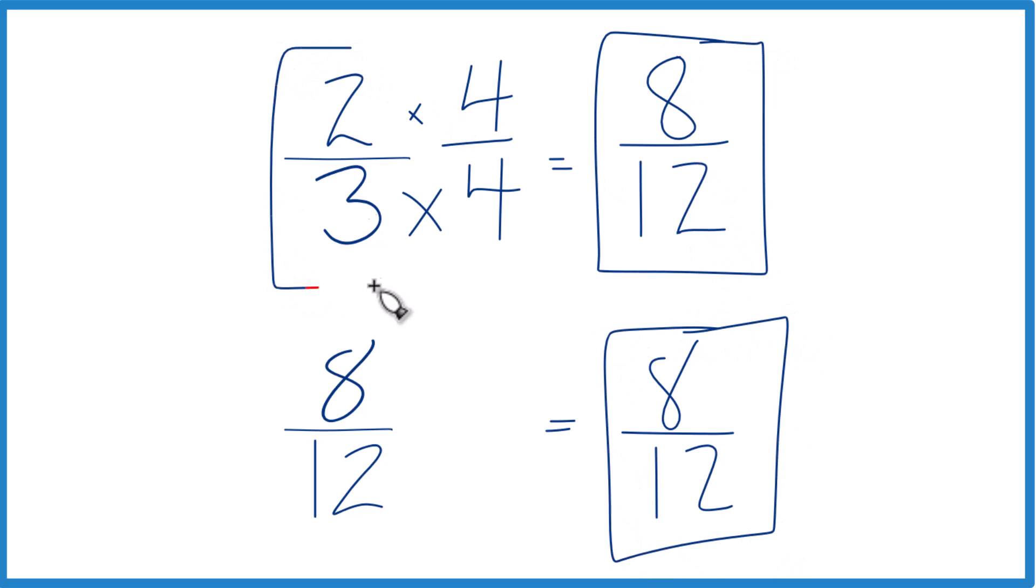That means that two-thirds, that's equal to eight-twelfths. They're equivalent fractions, just like we found up here.